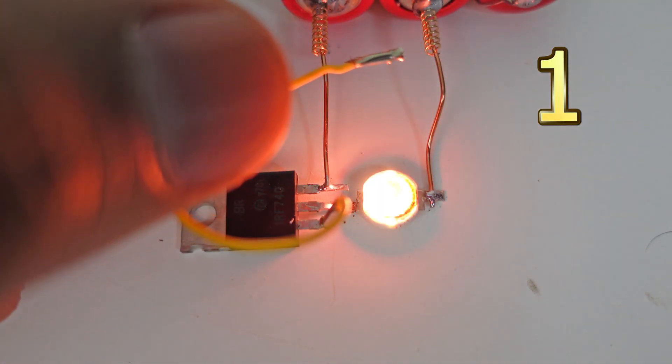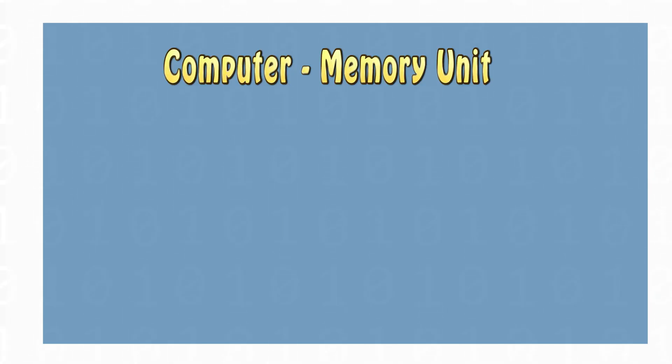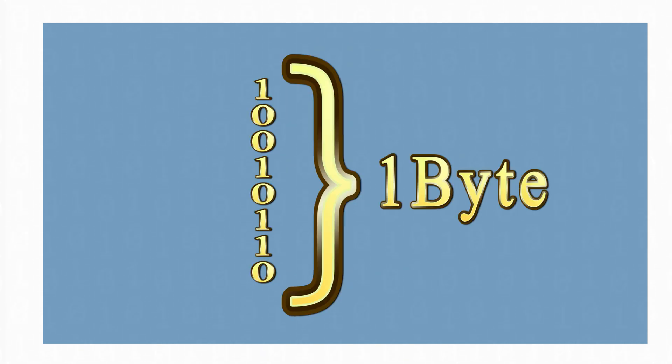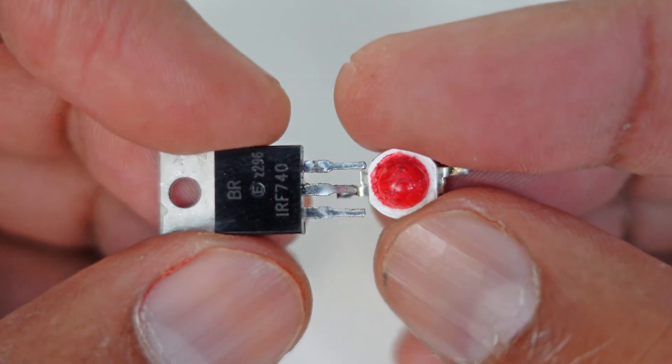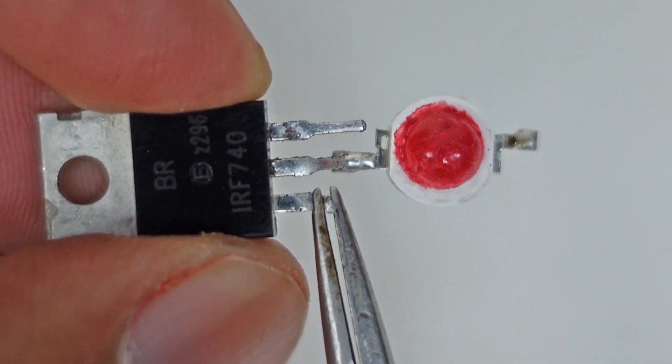When the switch is on we take it as a one and when the switch is off we take it as zero. We know that the basic unit of a computer's memory is a bit. A bit is a value of zero or one. Let's design one byte memory using MOSFETs. We know that a group of eight bits is called one byte. Let's design more memory cells by connecting MOSFETs and LEDs.